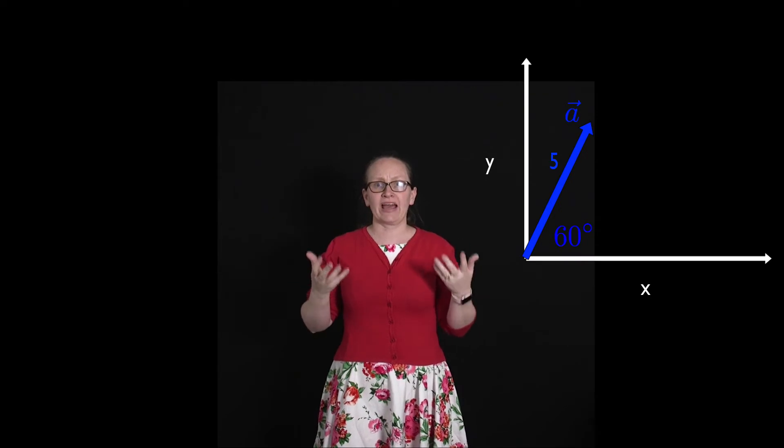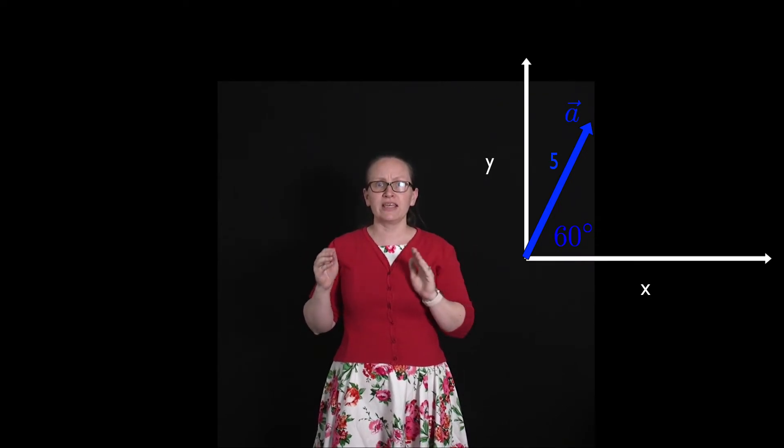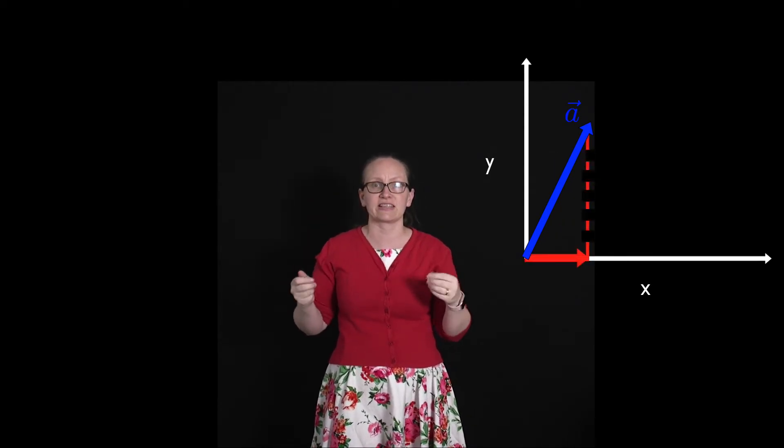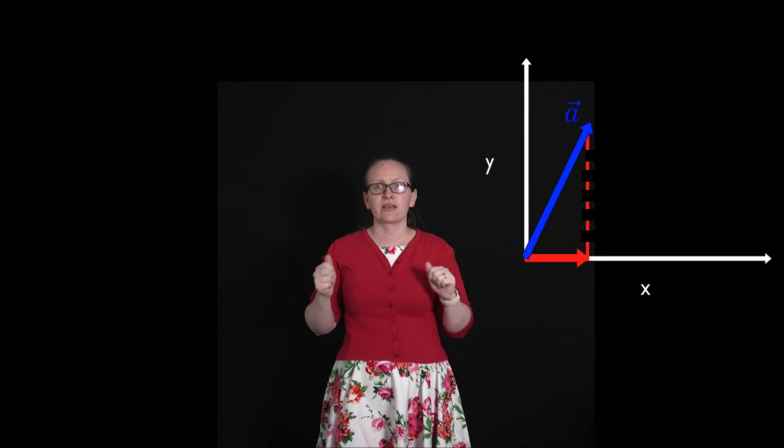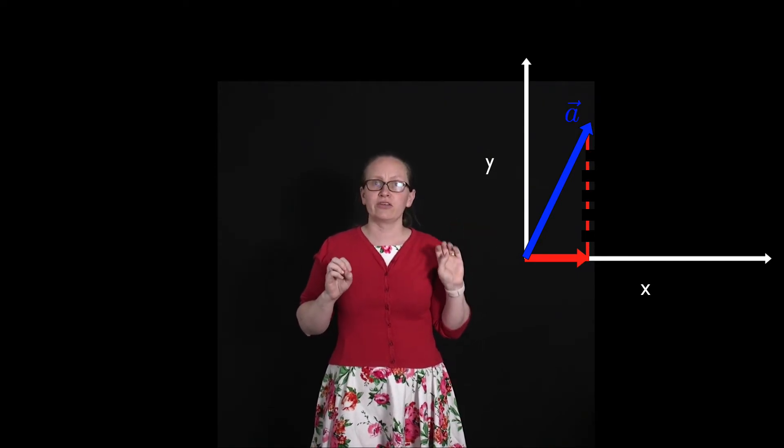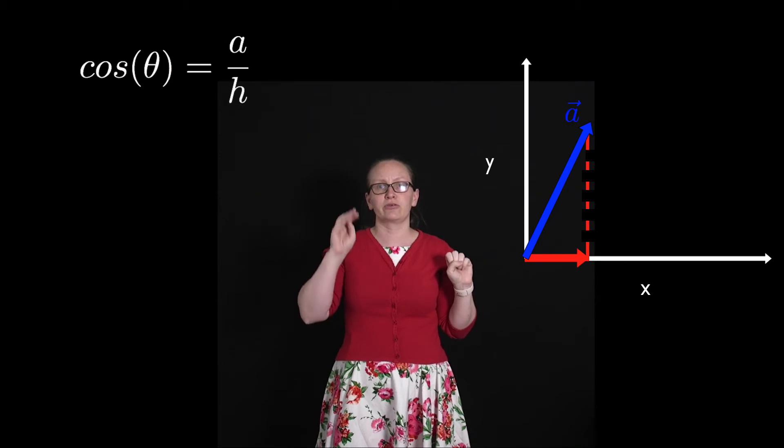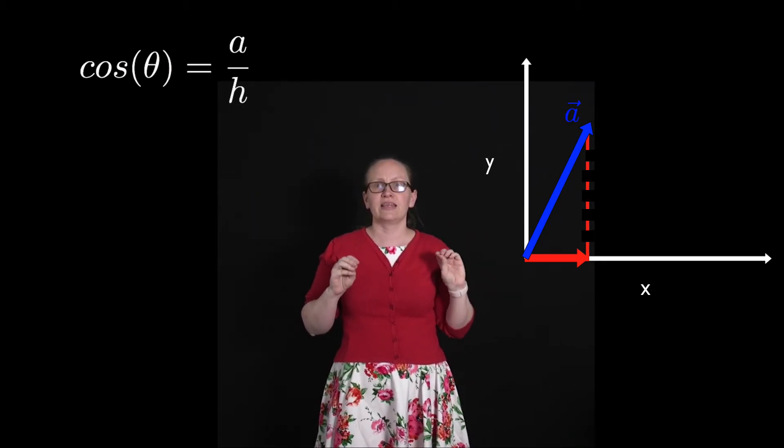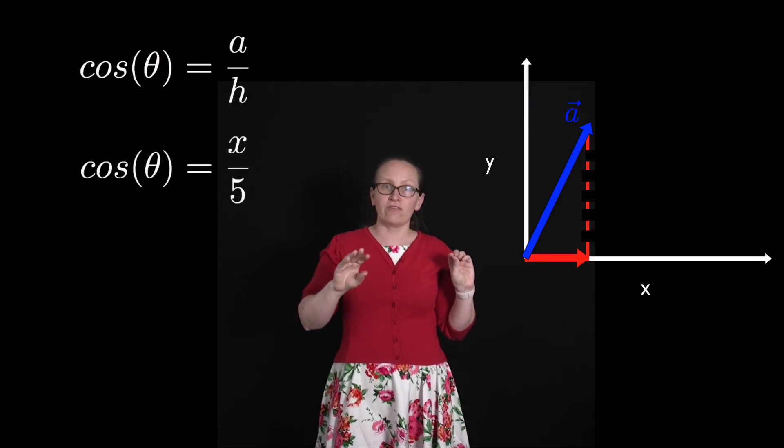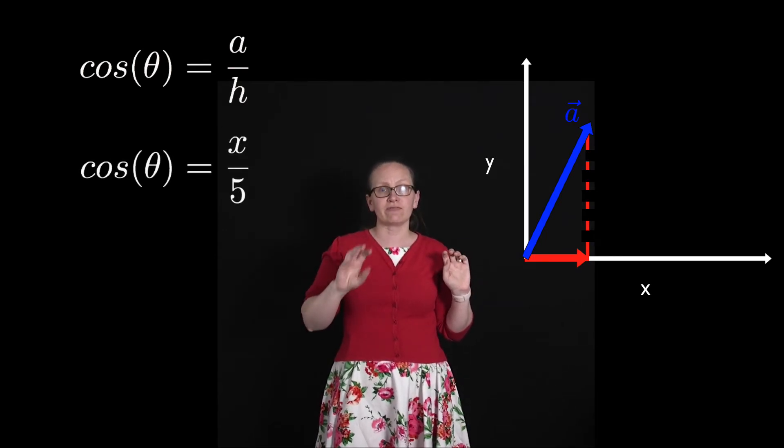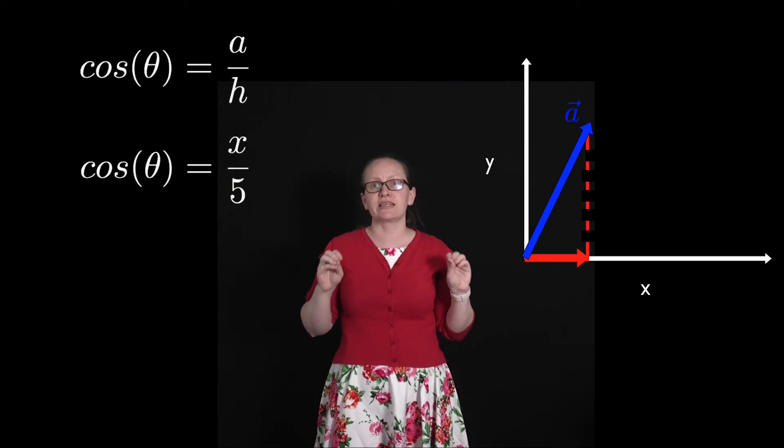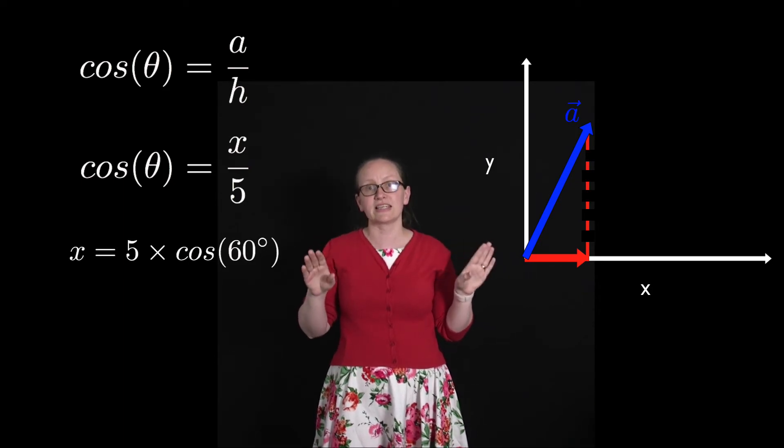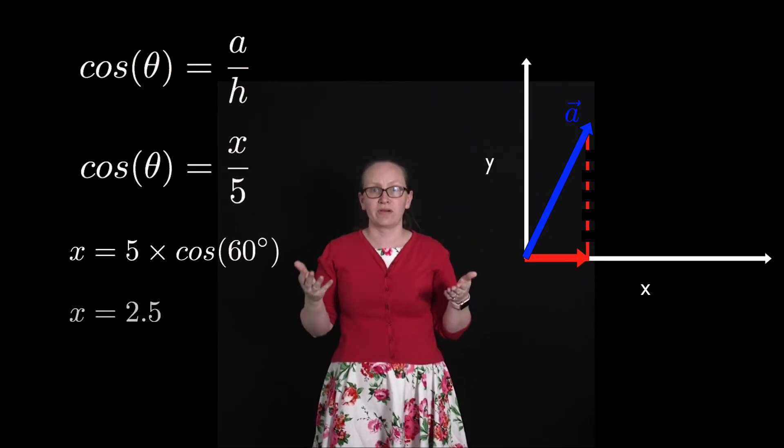So if we want to work out the x component of this vector, we need to calculate what's its length along the x axis. In order to do this, we can use our trigonometry. We know that cos theta is equal to the adjacent over the hypotenuse. So we can write cos theta is equal to x over the magnitude of a, which is 5 in this case. So rearranging this we can see that x is equal to 5 times cos 60, which is equal to 2.5.